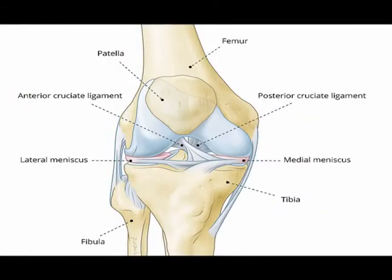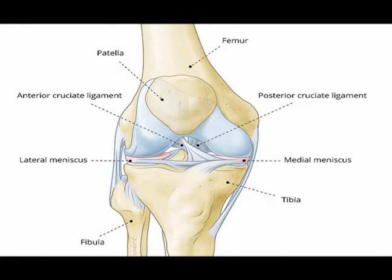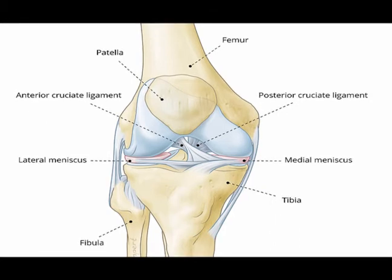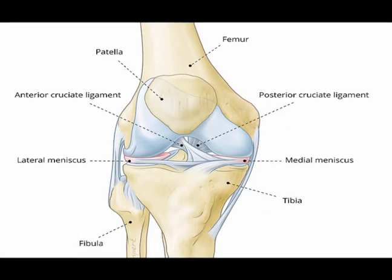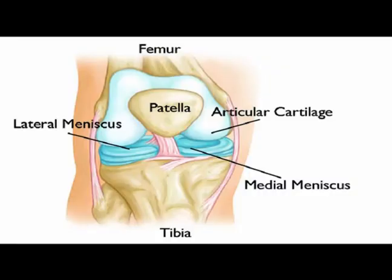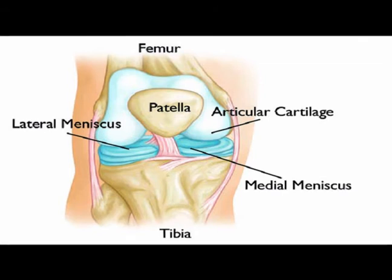The medial meniscus is much less mobile than the lateral meniscus during knee joint motion. The medial meniscus is firmly attached to the knee joint capsule and it also attaches to the medial collateral ligament. The lateral meniscus is not attached to the lateral collateral ligament and it is less firmly attached to the knee joint capsule.